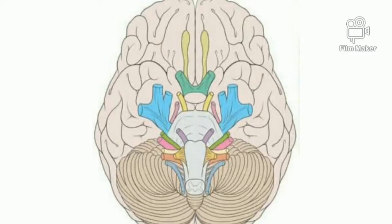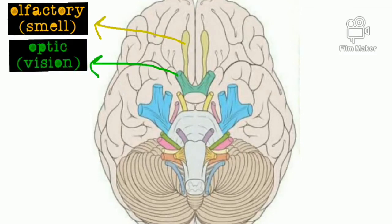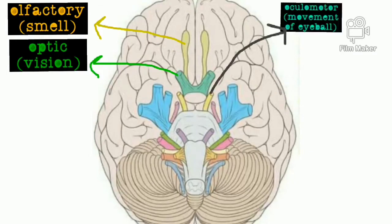Olfactory nerve, whose function is smell. Optic nerve, whose function is vision. Oculomotor nerve, whose function is movement of eyeball.